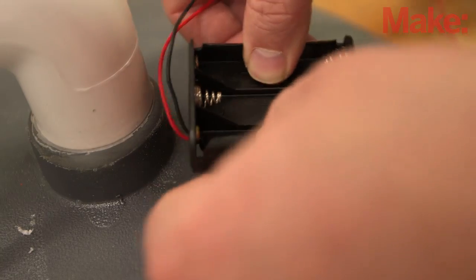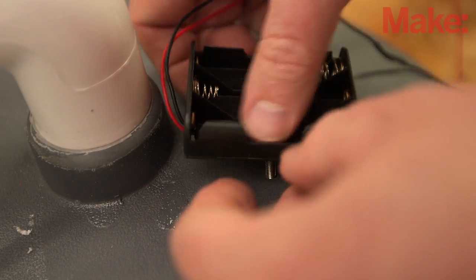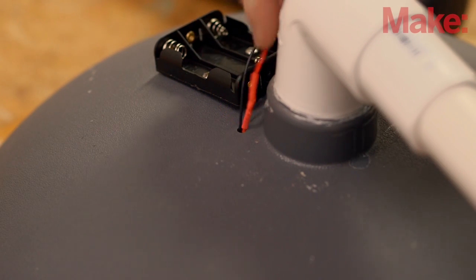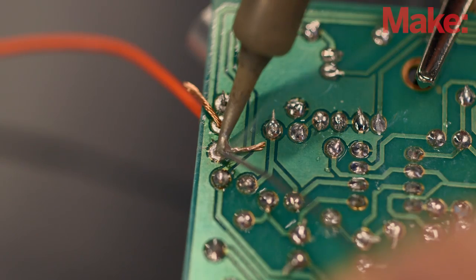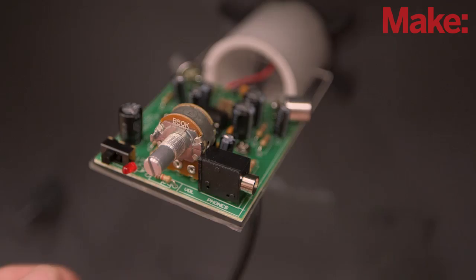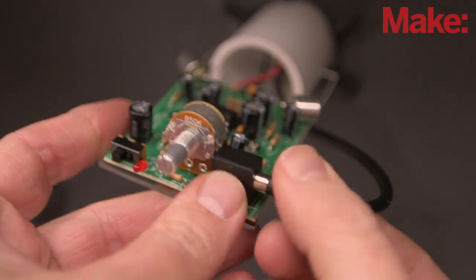Mount the battery holder supplied with the kit to the back of the baffle in a convenient location. Drill a small hole near the wires and feed them through the inside of the baffle and solder them to the PCB. The last step is to add the batteries and plug the audio cable to the PCB.